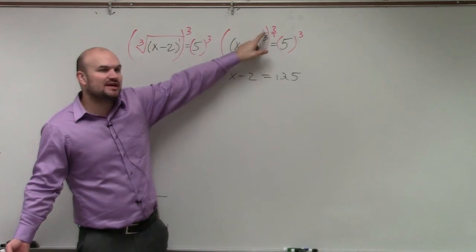You can think of this where the cube and the cube root are inverse operations, as well as raising a fraction to its reciprocal is an inverse operation. So all you're really doing is raising it to the inverse. Just make sure you do it to both sides. Now, all we need to do is add 2, and I have x equals 127.